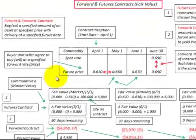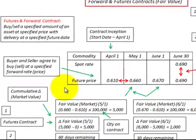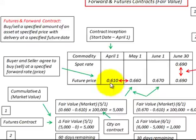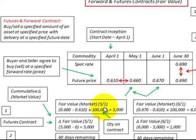To account for the contract, we look at the cumulative change in fair market value from period to period, from the beginning to the end of the contract. To do this, we compare the current period's forward rate or price with the contract forward rate — the agreed-on price between buyer and seller — then multiply the difference by the quantity under contract. That gives the fair market value of the contract for that period.